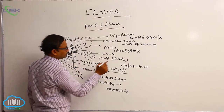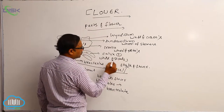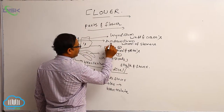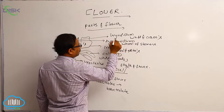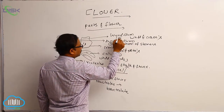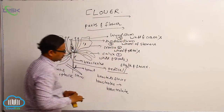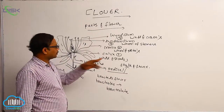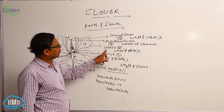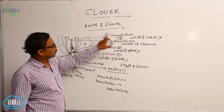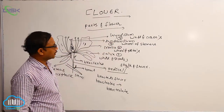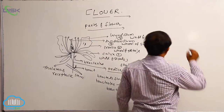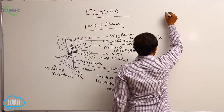The first whorl is the calyx — whorl of sepals. Corolla is the whorl of petals. Whorl of stamens is the third, androecium. Whorl of carpels or pistil is known as the gynoecium part. So: first whorl — calyx; second — corolla; third — androecium; fourth — gynoecium.